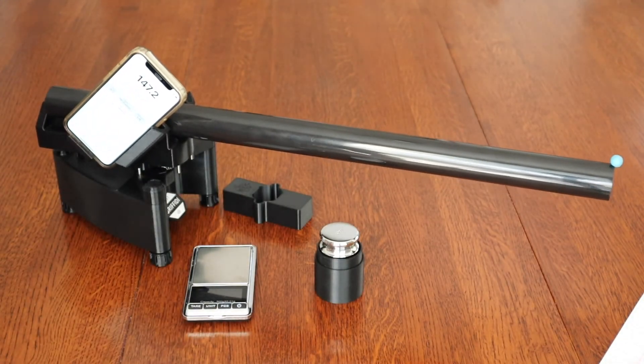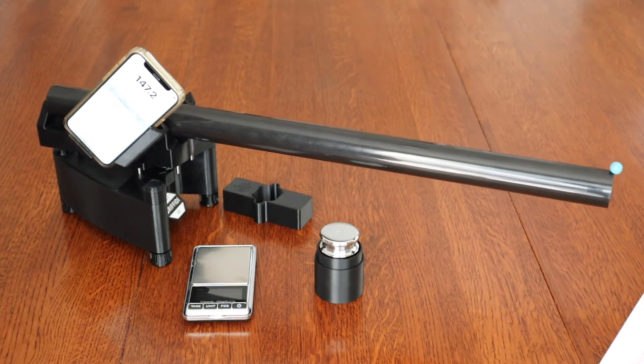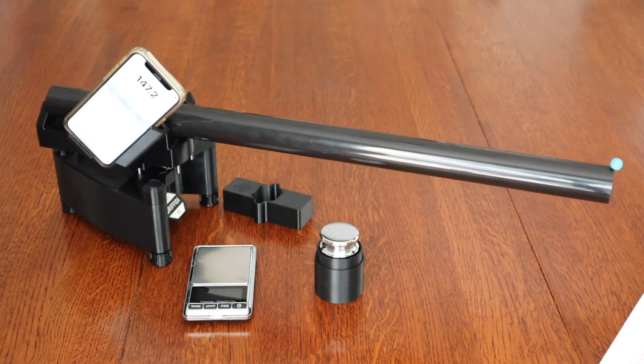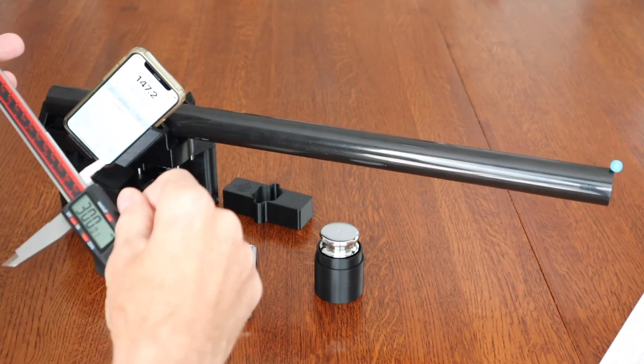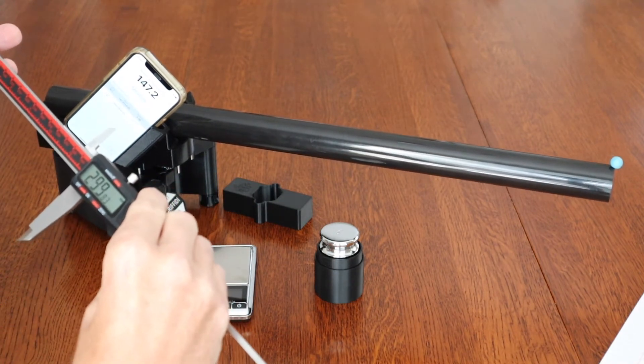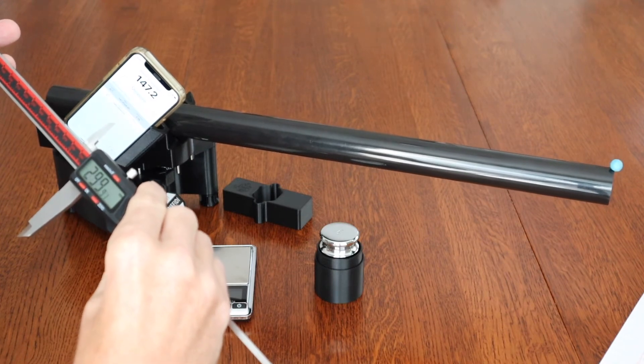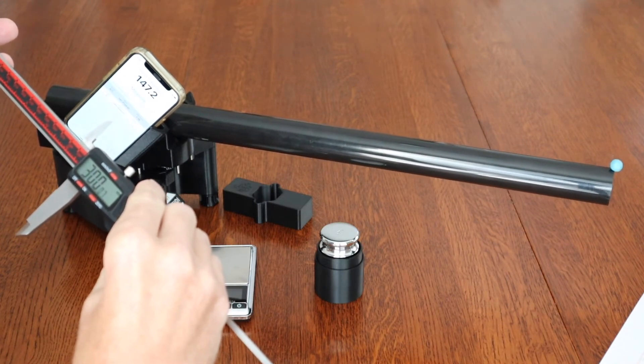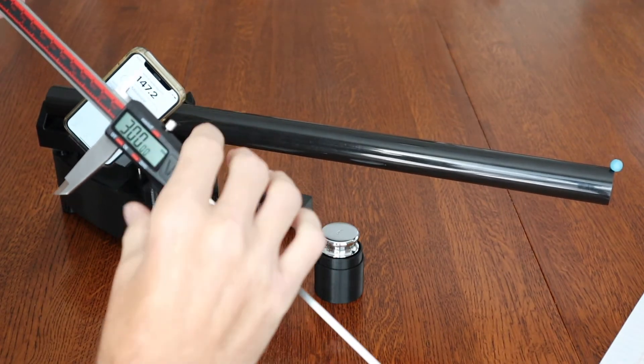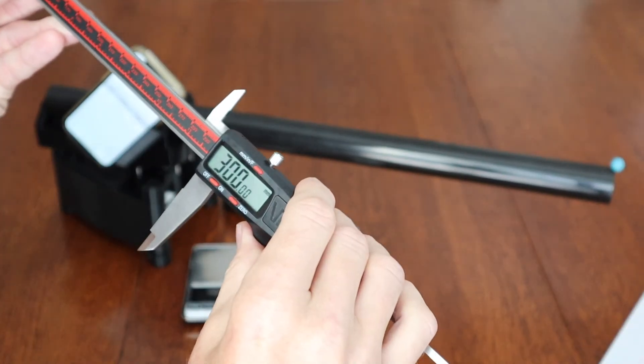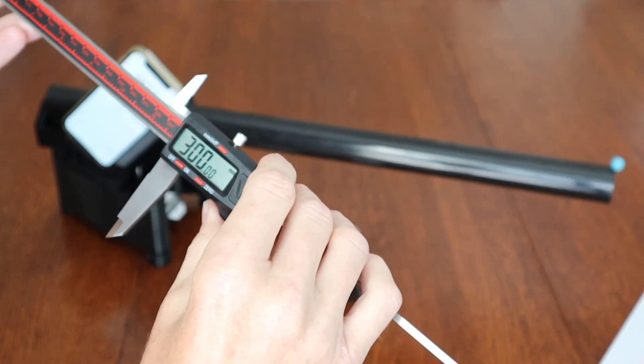Now I was going to put it at a different spot just to see the difference there. So I've got a caliper set up. I thought it was locked, but anyway, at 300mm or 30cm.